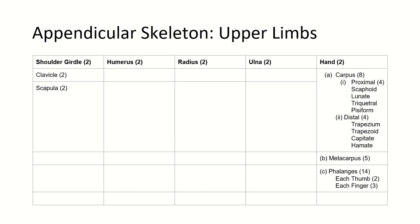So we have four proximal and four distal carpal bones. Metacarpus we have five. Phalanges we have 14 — each thumb has two and each finger has three bones.